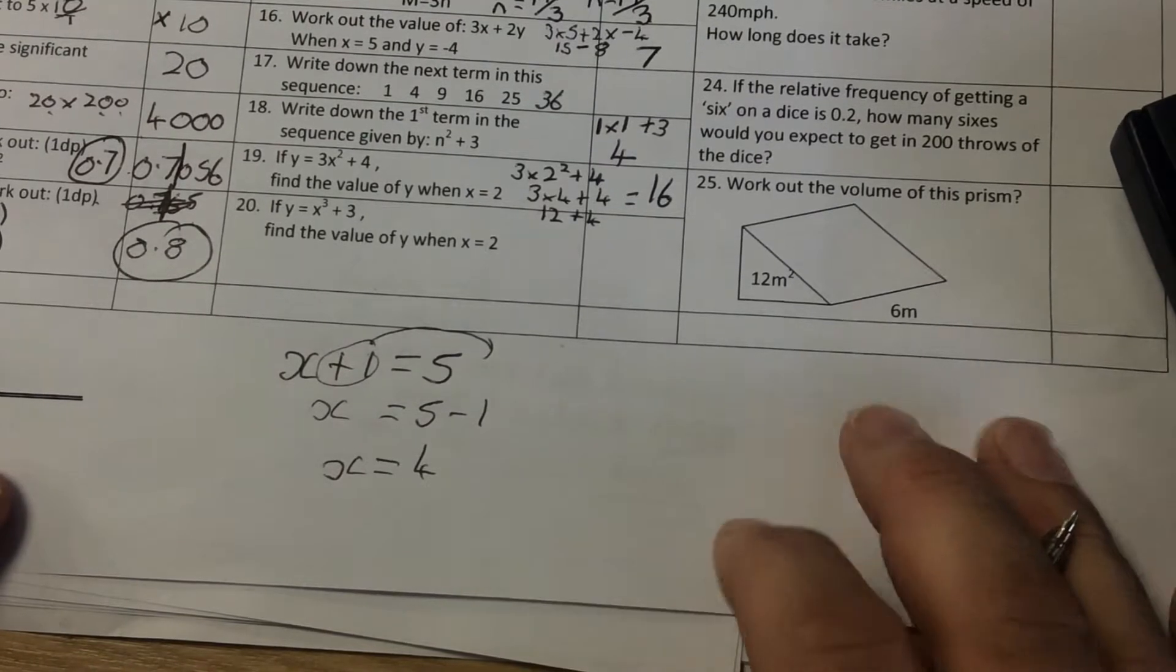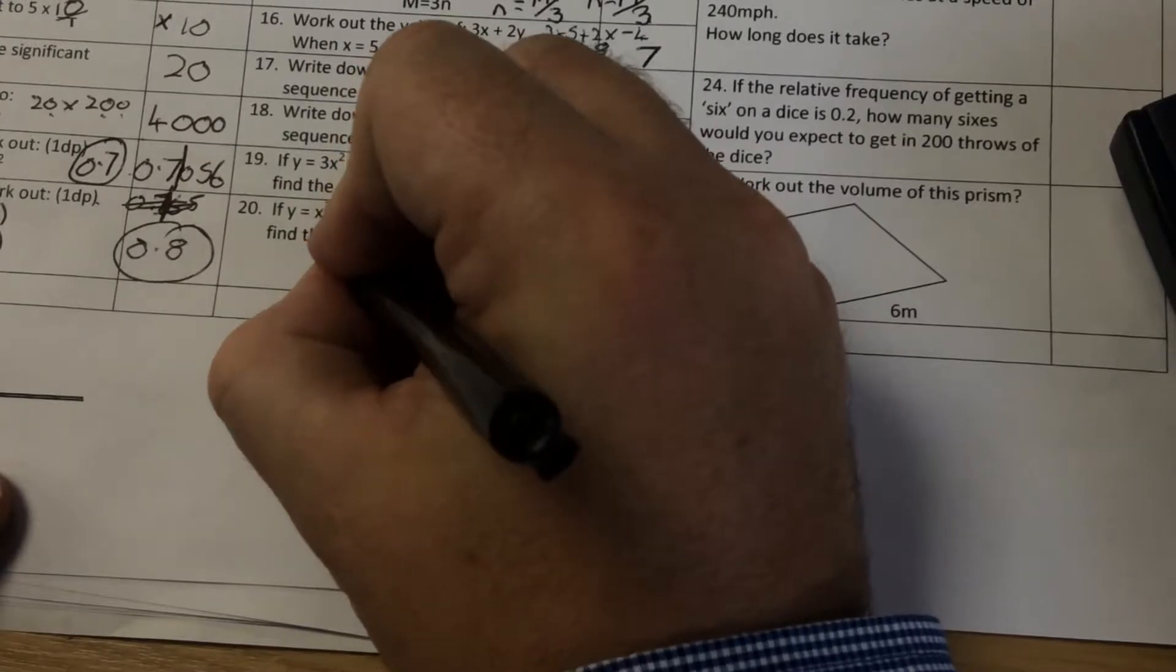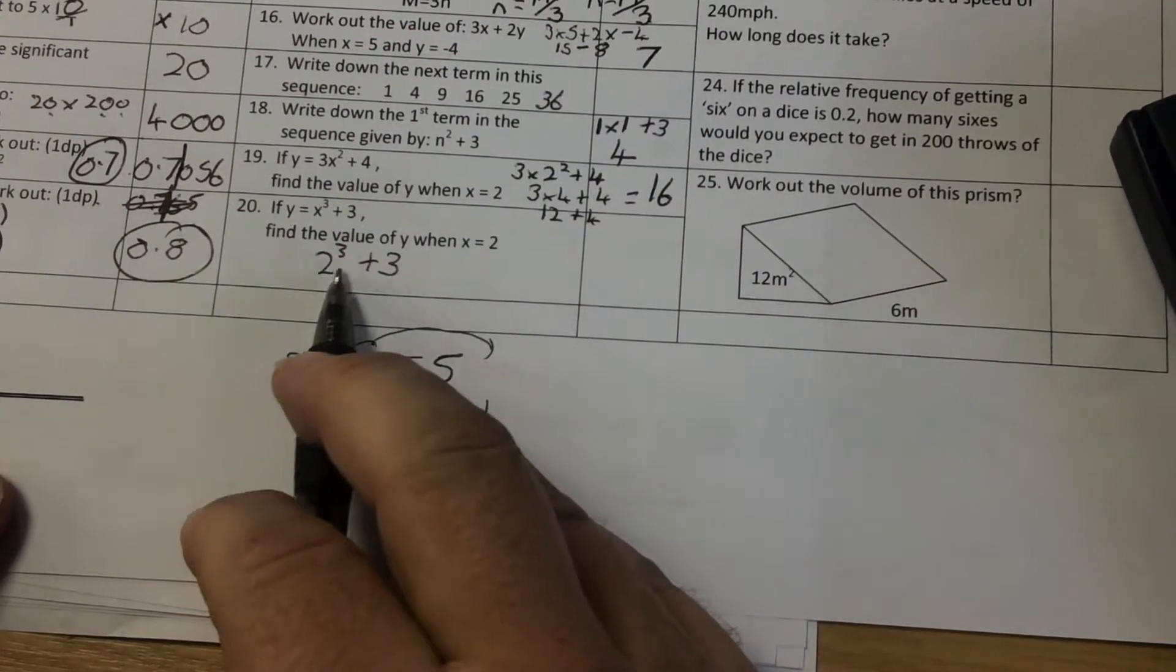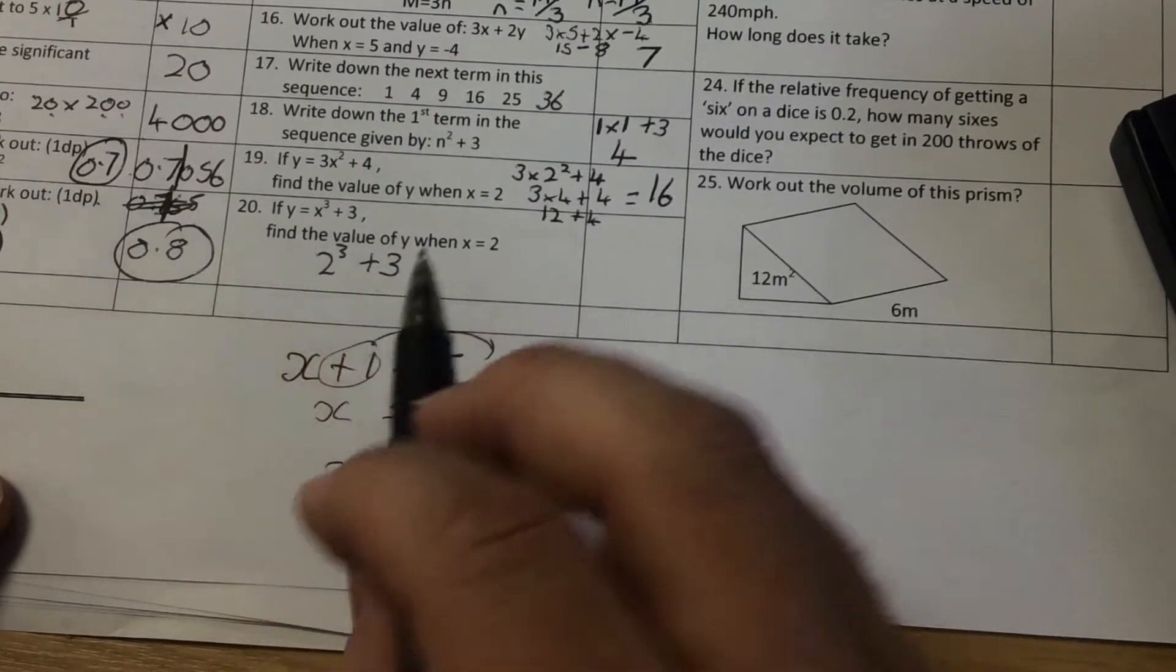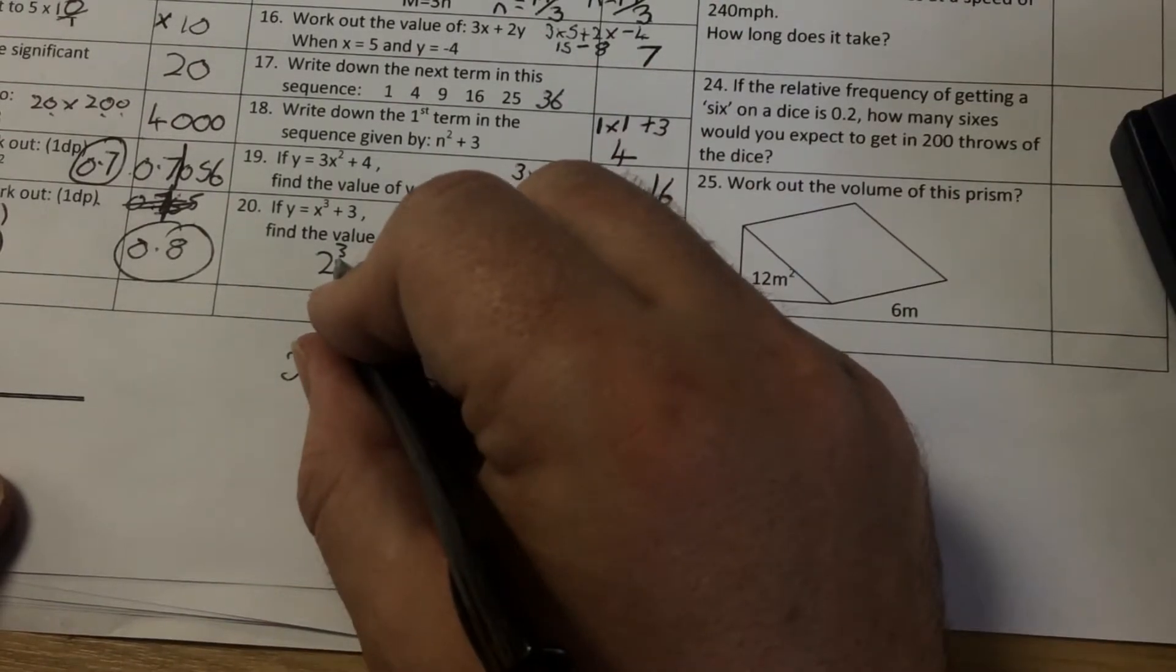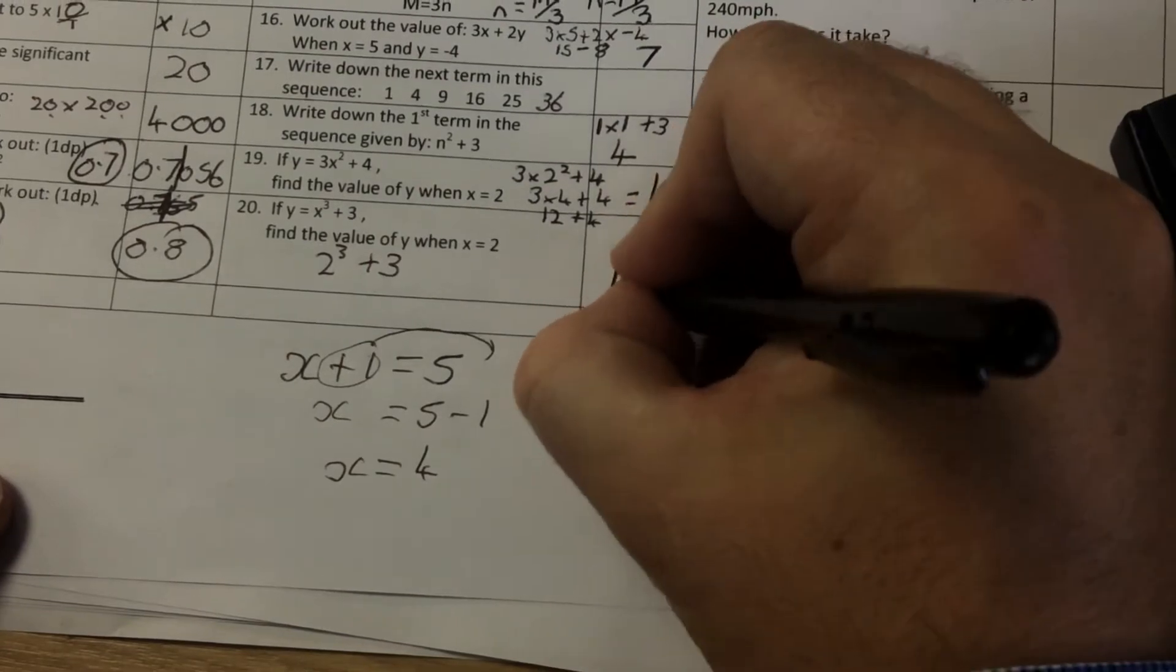Question number 20. X cubed plus 3. So it becomes 2 cubed plus 3. 2 cubed means 2 times 2 times 2. And then I'm adding on 3. So 2 times 2 times 2 is 8. Add 3 is 11.